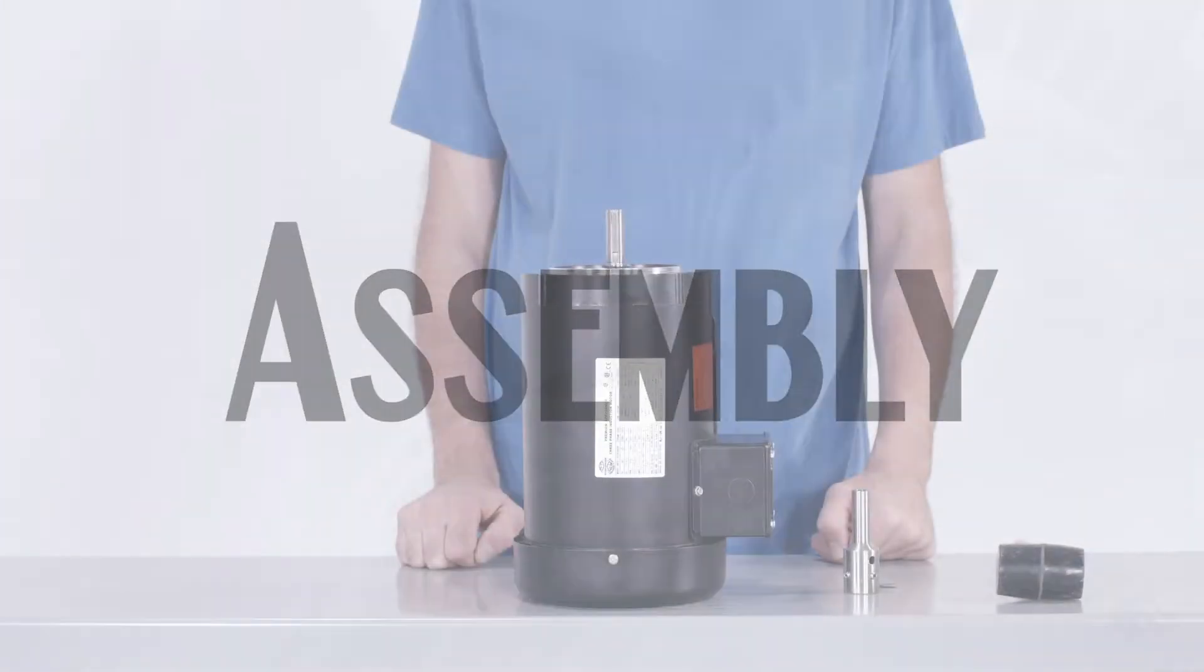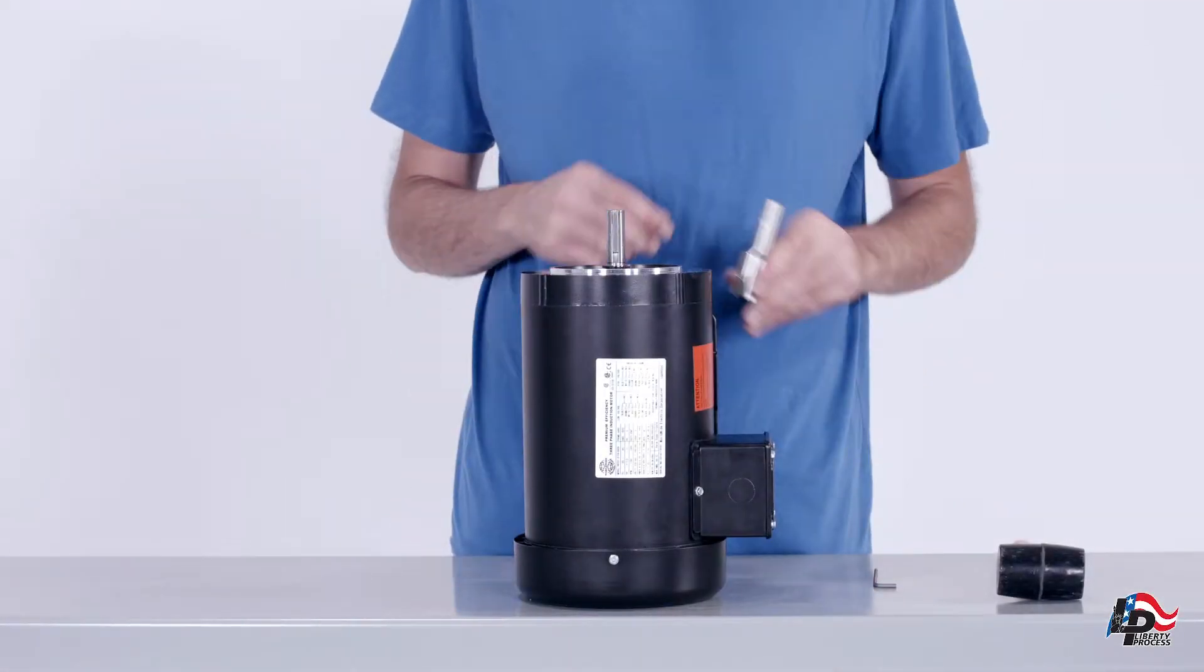Assembly of the APM44 pump. Make sure the pump motor is on the table and secure. Place pump stub shaft on the motor shaft and seat.